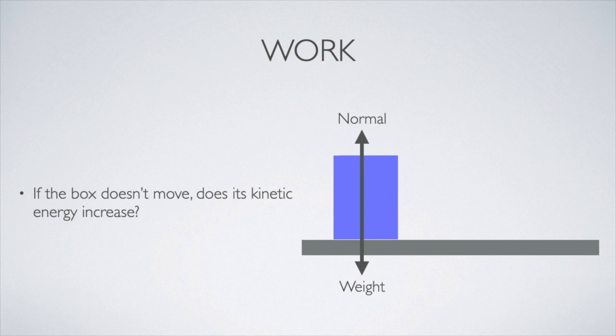To answer that, let's consider this example: an object is at rest under the action of two forces - the earth's gravitational force or weight, and a normal force exerted by the table. In this scenario, does the kinetic energy of that box increase? If it's not moving, the kinetic energy can't change. So therefore we need to have movement or a displacement in order for work to be done.